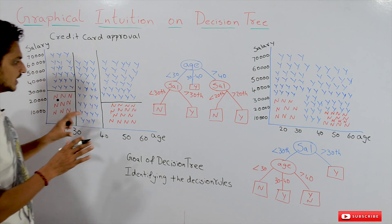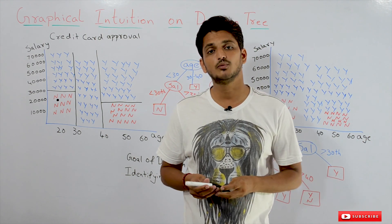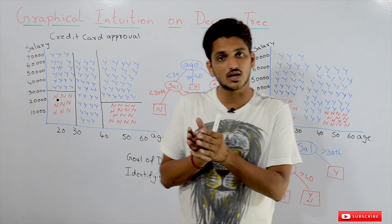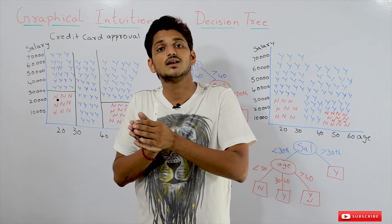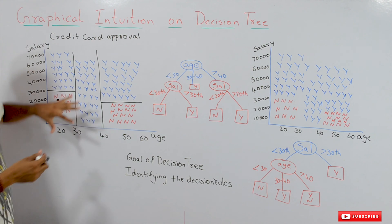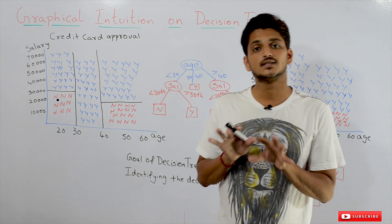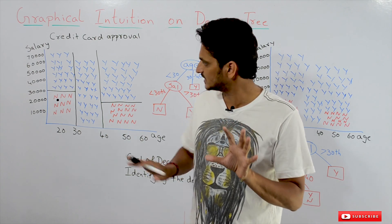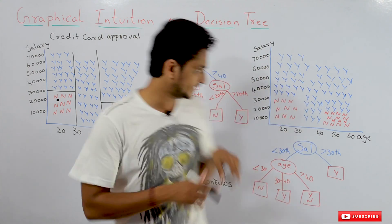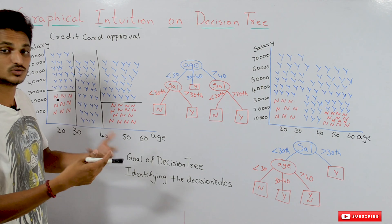An important point to understand: in previous classes we discussed support vector machine and logistic regression. Logistic regression and SVM work well when the dataset is linearly separable or almost linearly separable. But this dataset is not linearly separable — and we can apply decision trees on non-linear datasets as well. That is why we made this separate graphical intuition class, because decision trees themselves create the separations that give us non-linearity.